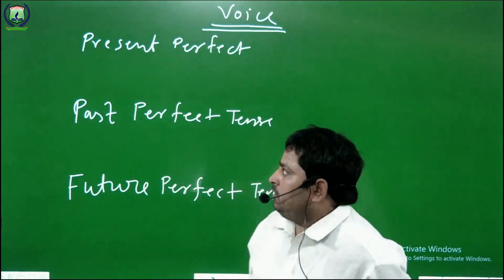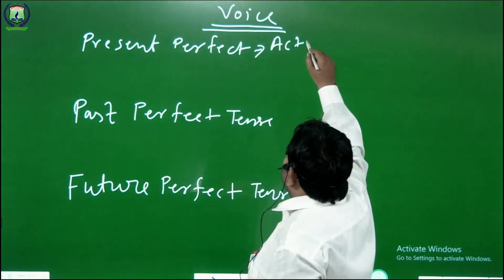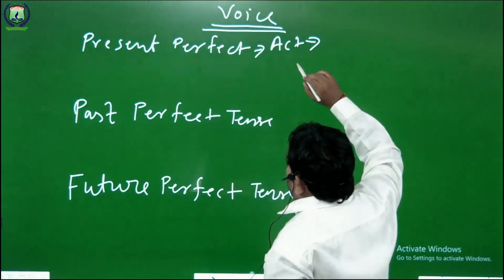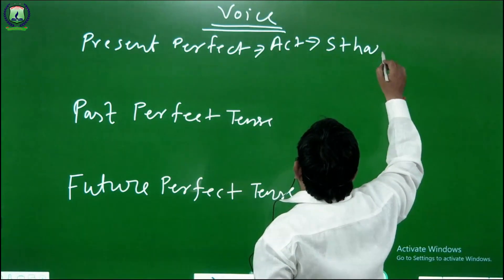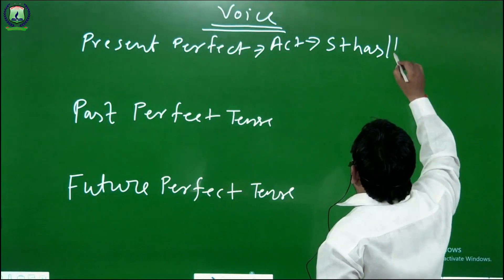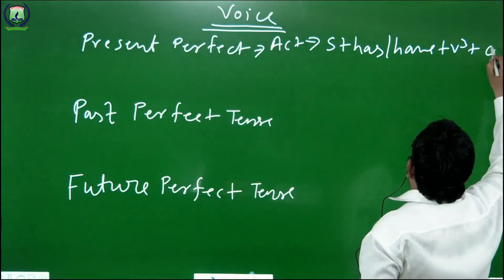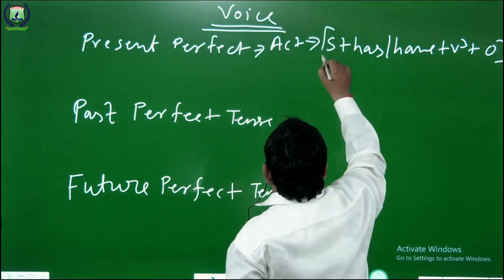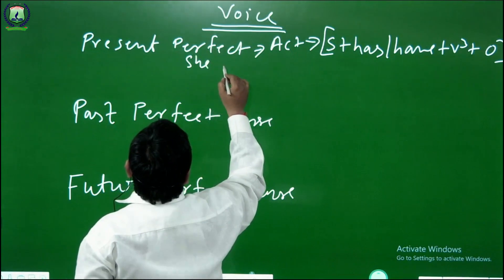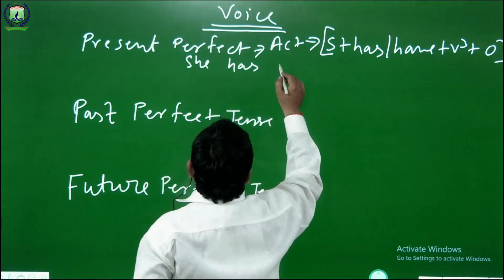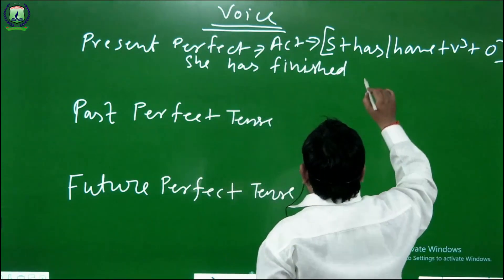Now I am going to tell you first of all the structure of active voice. The structure of active voice of present perfect tense is: subject plus helping verb has or have, plus third form of the verb, plus object. This is the structure of active voice. For example: she has finished her work.